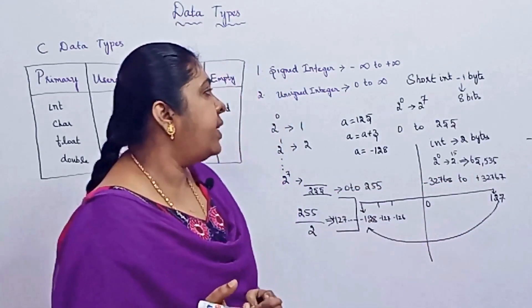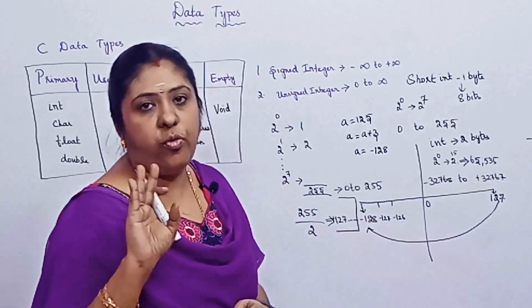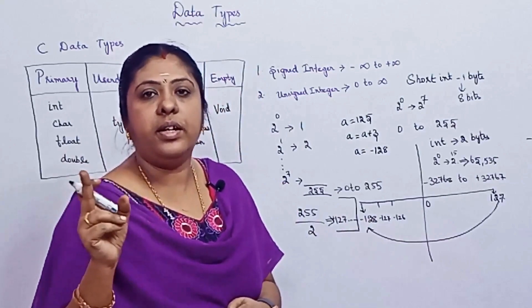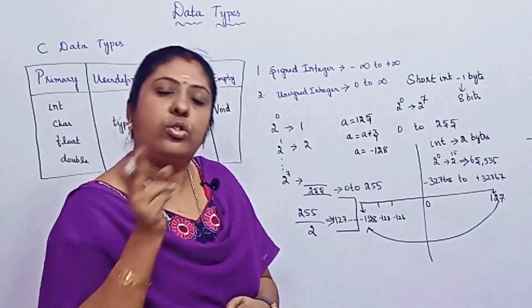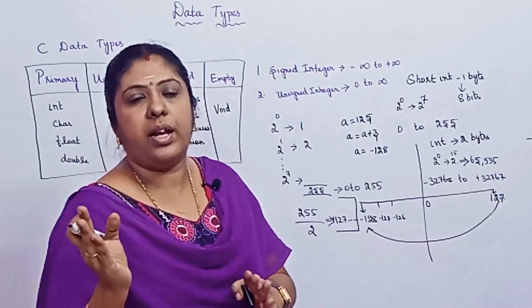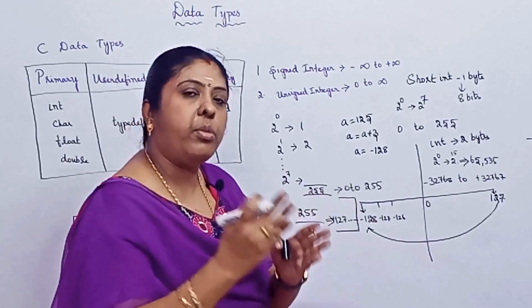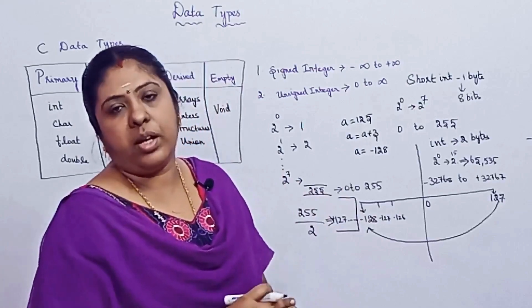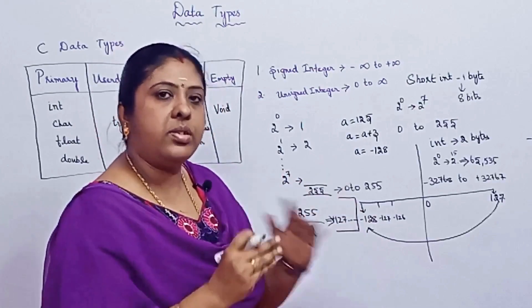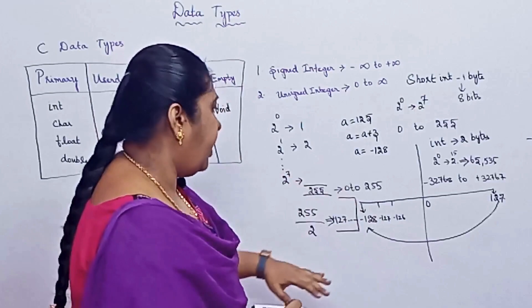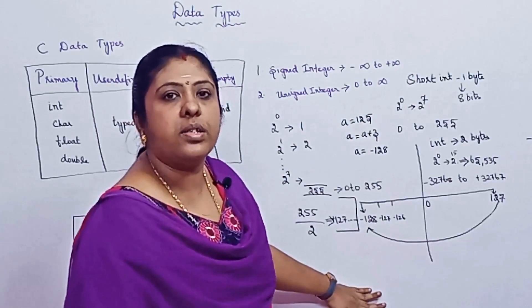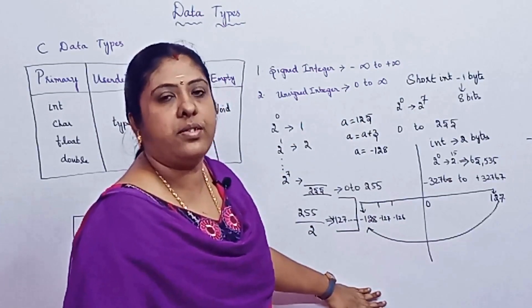For long integer, the size is 4 bytes, so 4 × 8 = 32 bits. You calculate 2^0 to 2^31. The resulting numbers are very large, so you don't need to memorize them — just understand the concept of how ranges are calculated based on the number of bits.